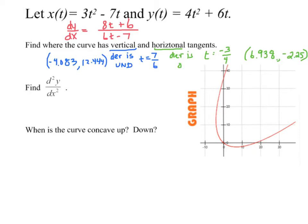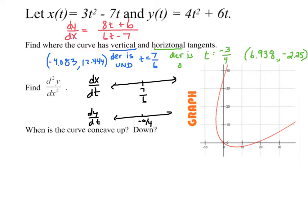Let me do a bit of sign analysis on both dx/dt and dy/dt. The zero of dx/dt — the denominator — was at t = 7/6. The zero of dy/dt — the numerator — was at t = negative 3/4. For dx/dt, which is 6t minus 7: plugging in a number less than 7/6 gives a negative, and plugging in a number bigger than 7/6 gives a positive. For dy/dt, plugging in a number less than negative 3/4 gives negative, and bigger gives positive.